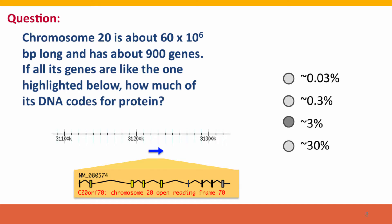I hope you got that. The right answer is 3%, and this comes from a combination of arithmetic and estimation. What you first have to do is a rough approximation of how much of this gene is actually coding for protein.